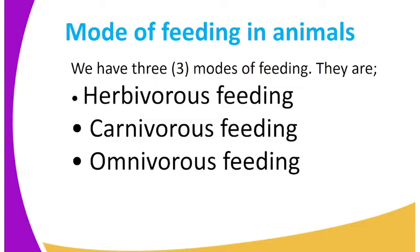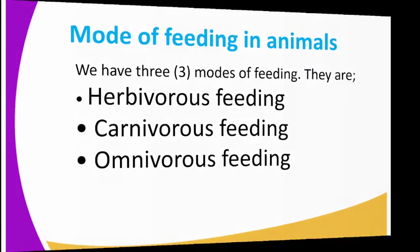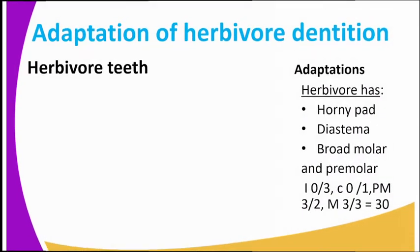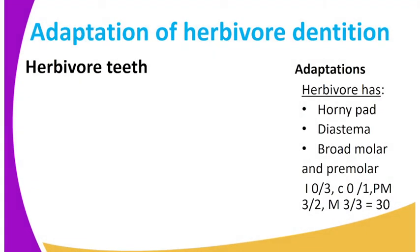As we have said, herbivorous feeding involves feeding on plants and herbs. Herbivores are divided into two main groups. The first ones are the grazers, which feed on grass — for example, the cow. The second ones are the browsers, which feed on shrubs and herbs.